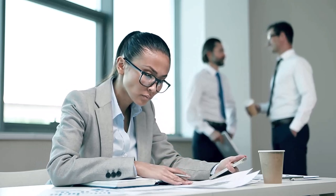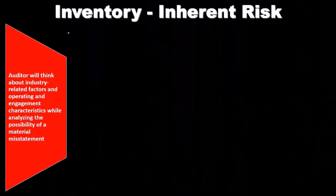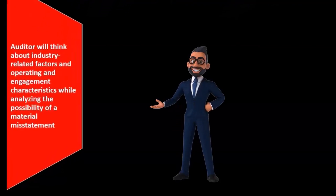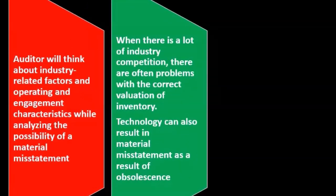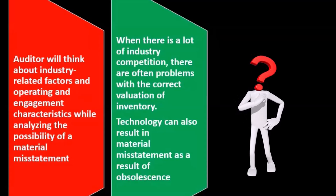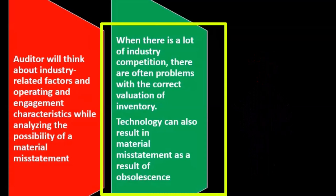We want to depend on the internal controls and need to understand these things. The auditor will need to think about industry-related factors and operating engagement characteristics while analyzing the possibility of material misstatement with regards to inventory — that's our main goal here. When there is a lot of industry competition, there are often problems with the correct valuation of inventory, so there's more inherent risk.